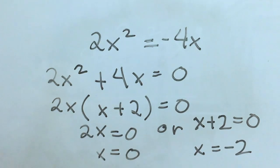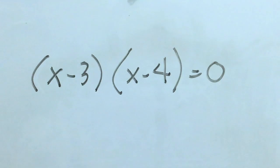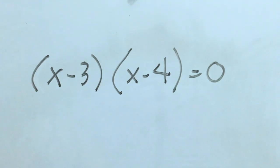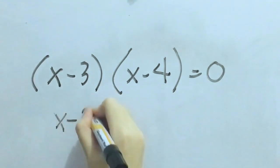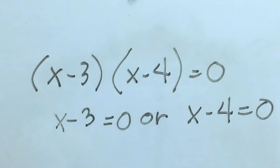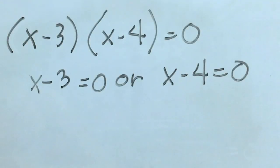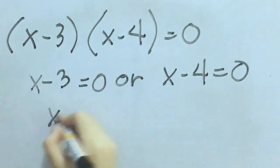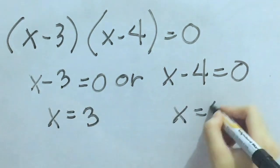Did you get that? Here's another. If the equation is in the form x minus a times x minus b equals zero, the roots are x equals a and x equals b. Given this, what are the roots of this equation? The roots in this equation are 3 and 4.